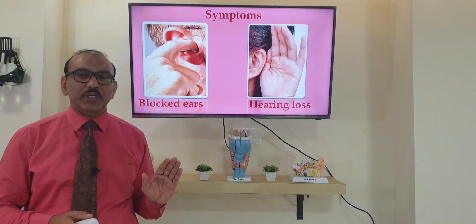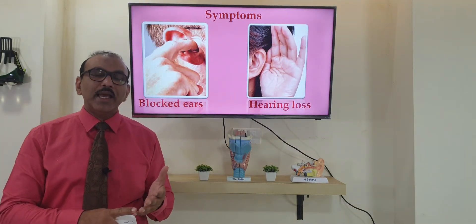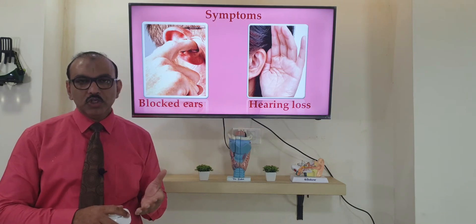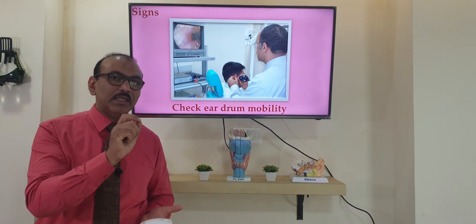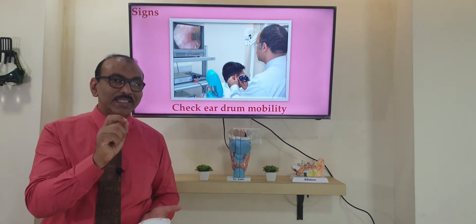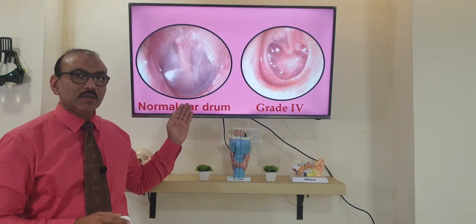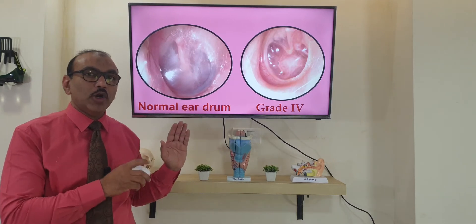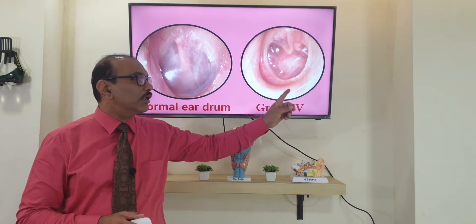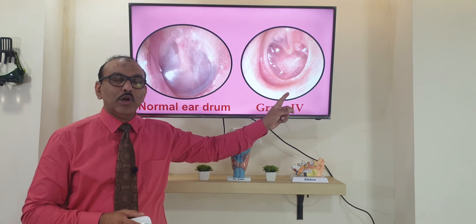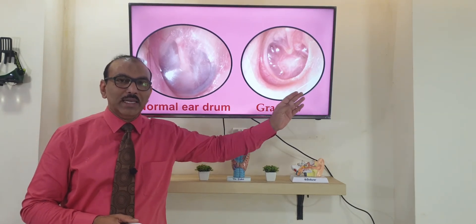The patient's complaints are that the ear feels blocked and there is hearing loss. When you examine the patient by putting a camera in the ear and examining the eardrum, the normal eardrum looks like this. But in the case of adhesive otitis media, it will look like this — the eardrum is plastered to the medial wall of the middle ear.